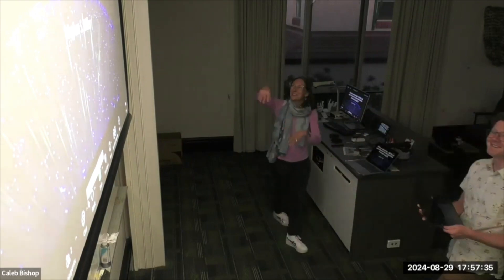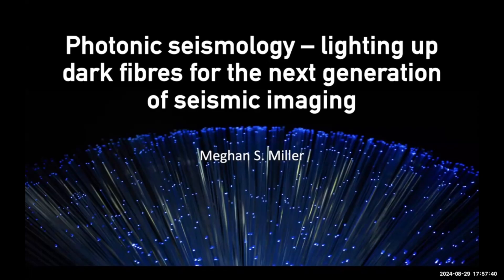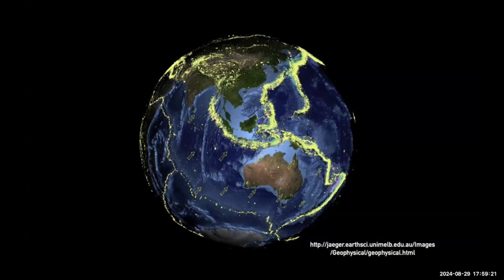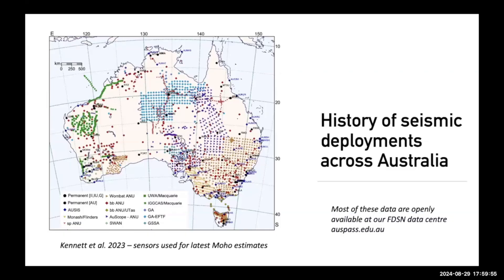Thank you very much for the invitation. I'm going to tell you about what I've been doing for my Future Fellowship, which is working on photonic seismology. I'm interested in the evolution of Earth generally, and how I investigate that is by looking at earthquakes. This is a global map of earthquakes color-coded with depth — the yellow ones are shallow earthquakes and at the Tonga subduction zone they get to be purple and blue. I use earthquakes to image the Earth's interior.